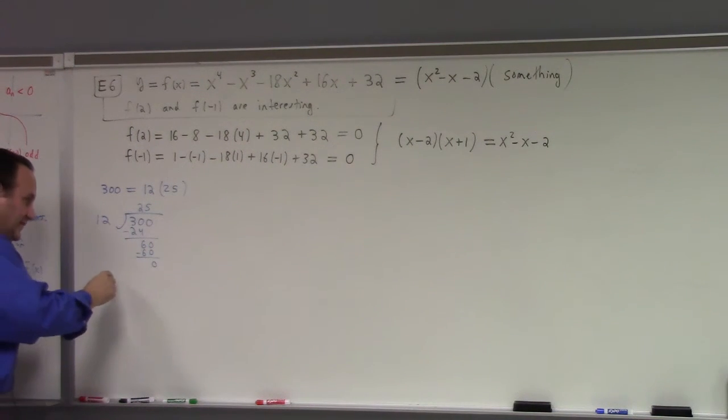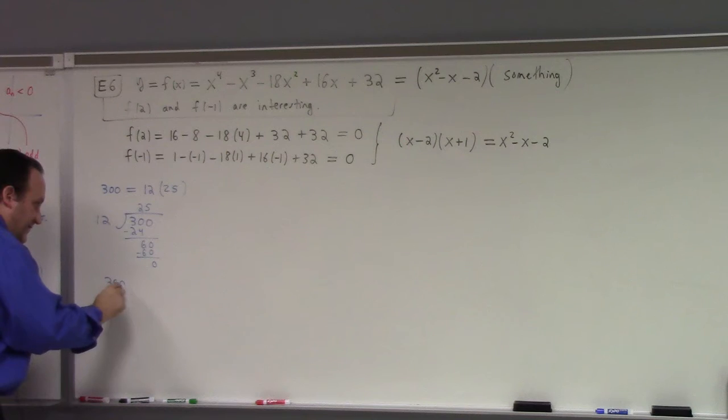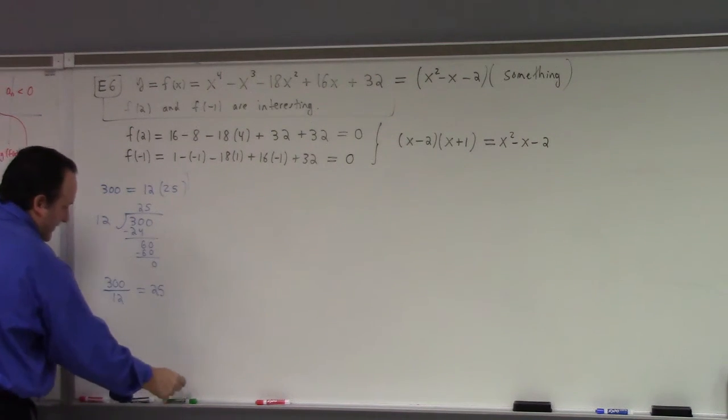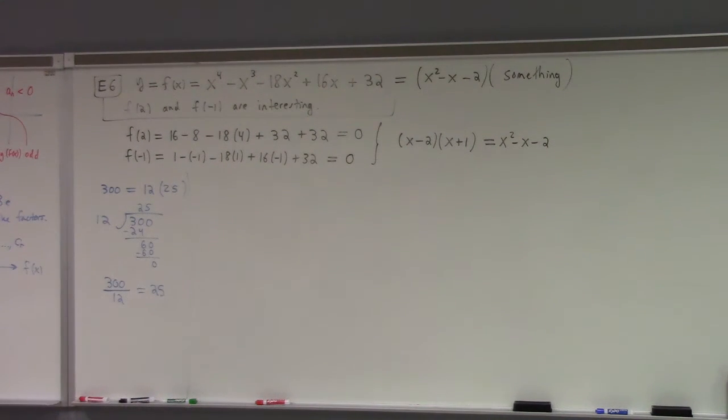Now, we usually package this calculation like this. 300 divided by 12 equals to 25. That's usually how you look at it in school math, let's say. Middle school. Whatever. Elementary, I hope.